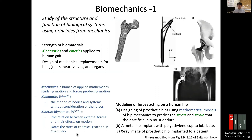Biomechanics is the study of the structure and function of biological systems using principles from mechanics. For example, imagine a part of the femoral bone of your leg — the big thigh bone — and we want to replace it with prosthetics. For patients who have a problem in this joint, we could use artificial hip joints. To develop a prosthetic hip, we need to understand the strength of these biomaterials from a mechanical point of view.